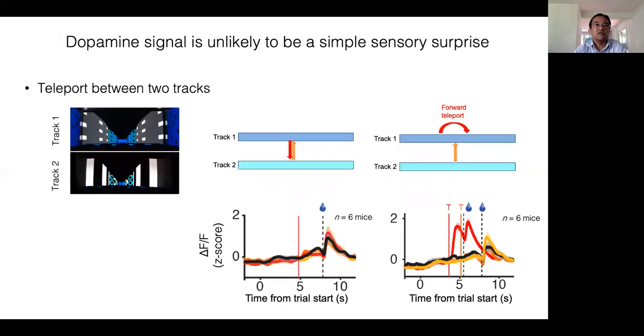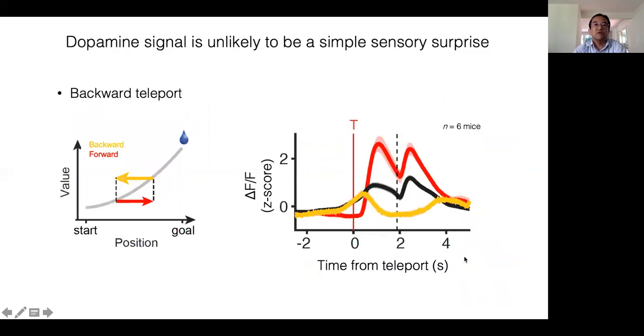One question that you might have at this point is whether the signals that we observe are just sensory surprise. To address this question, we performed teleports between two different tracks. While running in one track, mice were teleported to another track occasionally. If dopamine neurons respond to sensory surprise or sensory prediction error, we should see a response. But we did not see such a response. And as a control, we performed a forward teleport with the same animals, which evoked a big response. We also performed a backward teleport. Backward teleport causes a sensory surprise, but causes a decrease rather than an increase of value. If dopamine represents a sensory surprise, we should see a transient excitation similar to a forward teleport. However, the calcium signal rather decreased after backward teleport, likely reflecting a decrease in value.